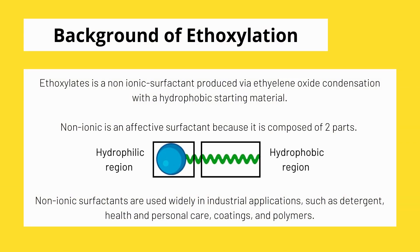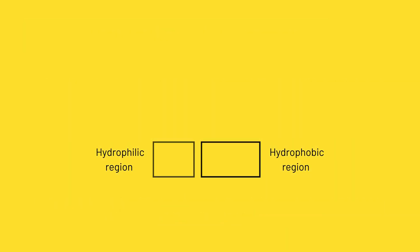Ethoxylation is a reaction to produce ethoxylates. Ethoxylate is a non-ionic surfactant produced via ethylene oxide condensation onto a hydrophobic starting material, mostly in the presence of an alkaline catalyst such as NaOH or KOH. Non-ionic surfactants are used widely in industrial applications such as detergents, health and personal care, coatings, and polymers.